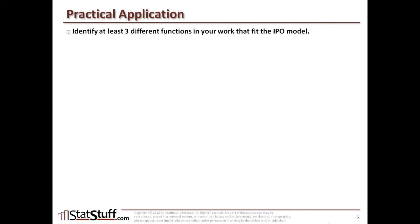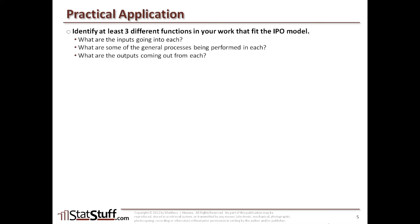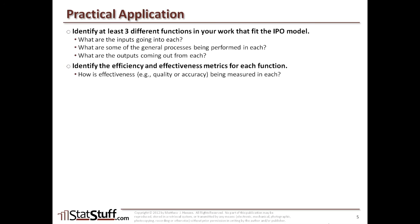Before we close this lesson, let's discuss how we can apply some of these concepts in a practical way. I'd like you to try to identify at least three different functions in the area where you work that fit into the IPO flow model, and ask these questions for each: What are the inputs going into each function? What are the general processes being performed? And what are the outputs coming out from each function? Also explore the efficiency and effectiveness metrics — from an effectiveness standpoint, what would you measure for quality or accuracy of those outputs? And from an efficiency standpoint, how would you measure timeliness or efficiency of those functions?